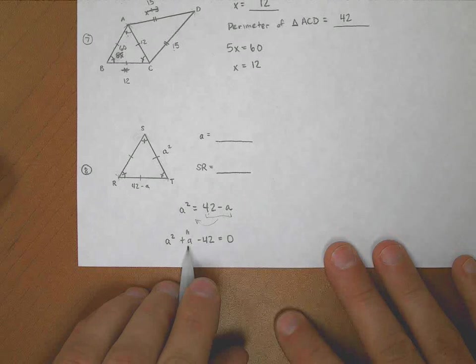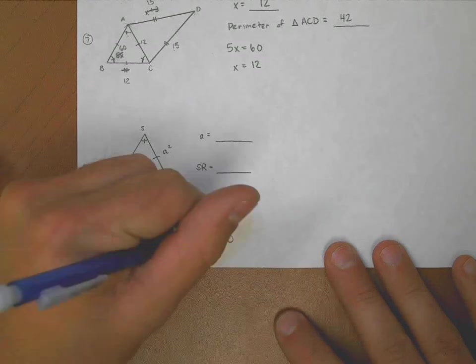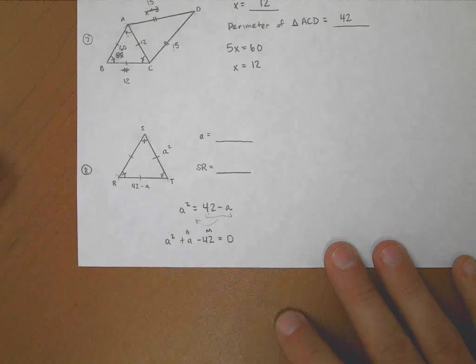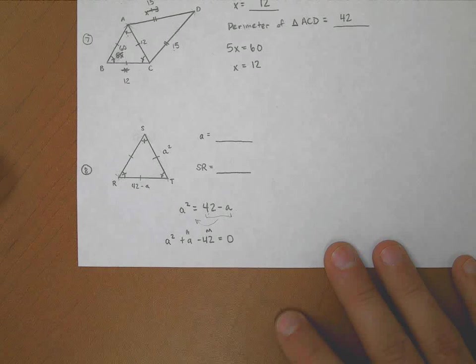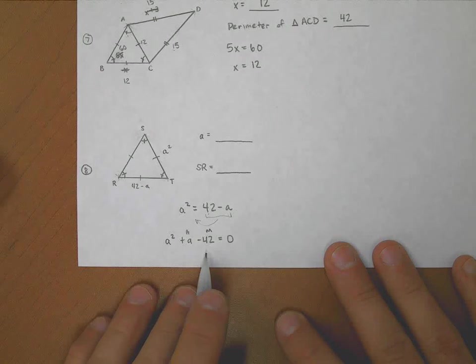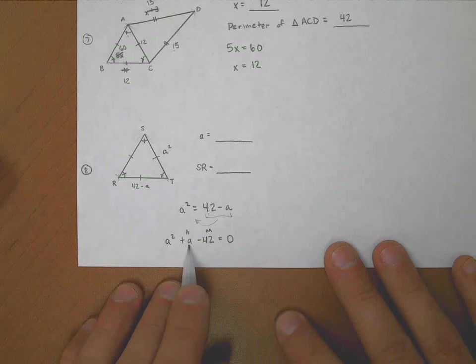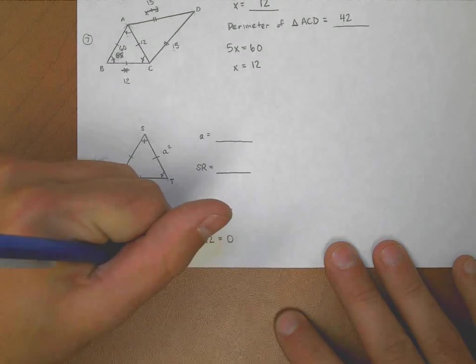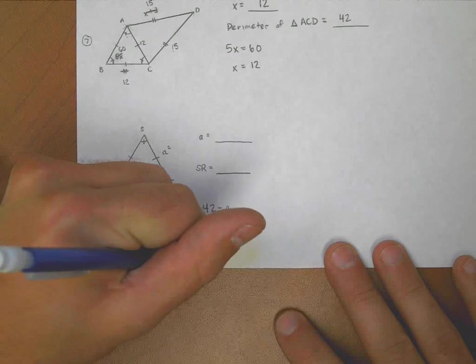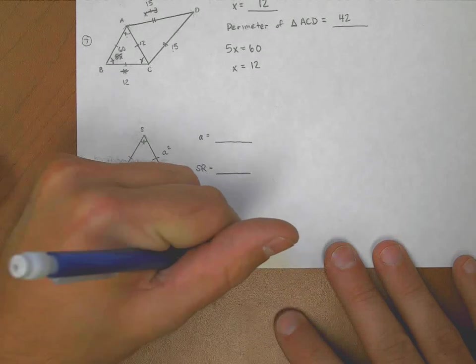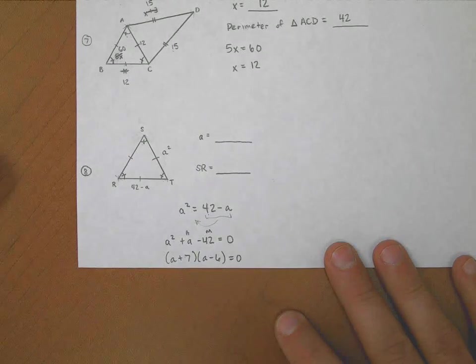That is a factoring problem. I need two numbers that add up to positive one, but multiply to a negative 42. I'm thinking six and seven. And it looks like maybe the seven needs to be the positive one. So I can factor this as a plus seven, a minus six. Those are equal to zero.